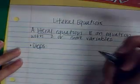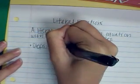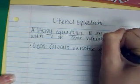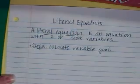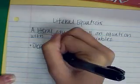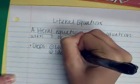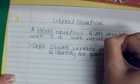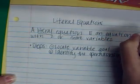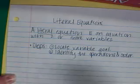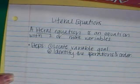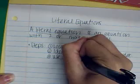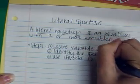Step number one is to locate the variable goal. So, figure out what variable you're trying to solve for. Step two is to identify the operations and the order. And step three, use inverses to isolate the variable.